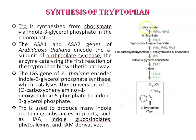Tryptophan is synthesized from chorismate via indole-3-glycerol phosphate. Chorismate is an anionic form of chorismic acid and is an important biochemical intermediate in plants and microorganisms. The ASA1 and ASA2 genes of Arabidopsis thaliana encode a subunit of anthranilate synthase enzyme, the enzyme that catalyzes the first reaction of the tryptophan biosynthetic pathway.